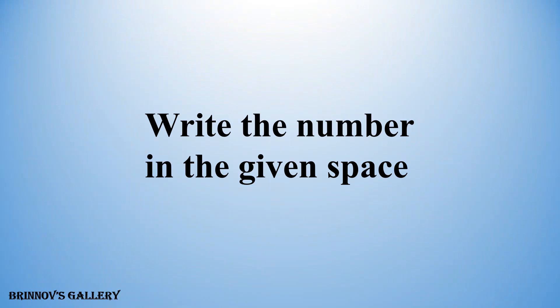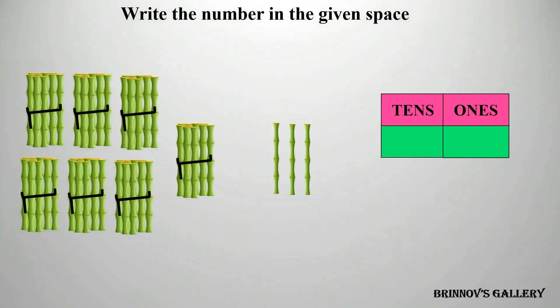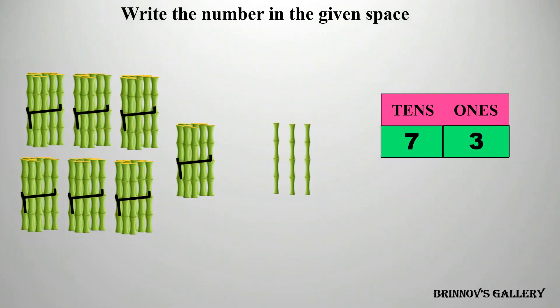Write the number in the given space. Five tens, 1 one — the number is 51. Seven tens, three ones — the number is 73.